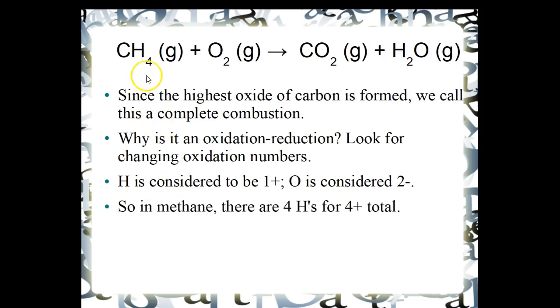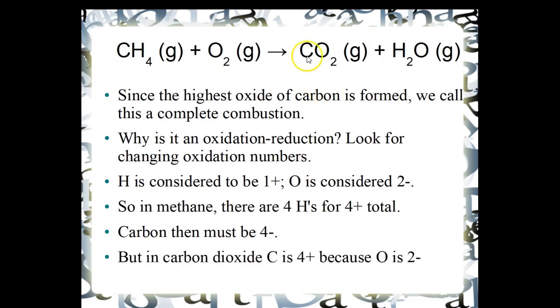H is considered to be one plus and oxygen two minus. So in methane, there are four hydrogens, and four times plus one is plus four. Carbon then must be minus four so that we reduce this total charge on the methane to zero. But in carbon dioxide with two oxygens each minus two, we're going to have to assign the carbon a plus four oxidation number. Therefore, this is an oxidation-reduction because the carbon is changing its charge. The oxygen is as well because it starts off at zero and ends up as negative two. All combustion reactions then are oxidation-reduction reactions. Down deep, they are losing and gaining electrons.